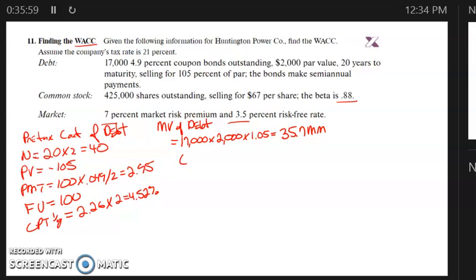So cost of equity. This would be R sub E. We take the risk-free rate, 3.5, plus the beta of 0.88, and multiply that by the market risk premium.